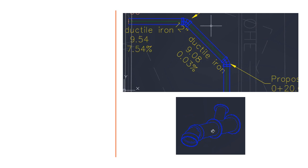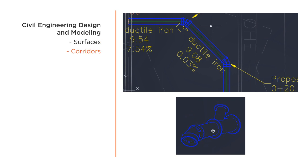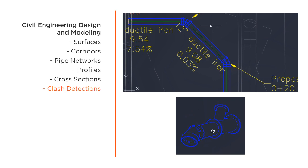On the civil engineering side, we've been designing and modeling everything outside buildings and structures in a 3D environment for just as long, if not longer, than the term BIM has been around. During this time, we've been able to build surfaces, corridor models, pipe networks, produce dynamic profiles and cross sections based on that information. We've been able to perform clash detections and earthwork quantities, and even generate reports and cost estimates. Although we've been producing some form of a 3D model within our designs over the years, the final product has almost always been a hybrid of 2D and 3D design components.